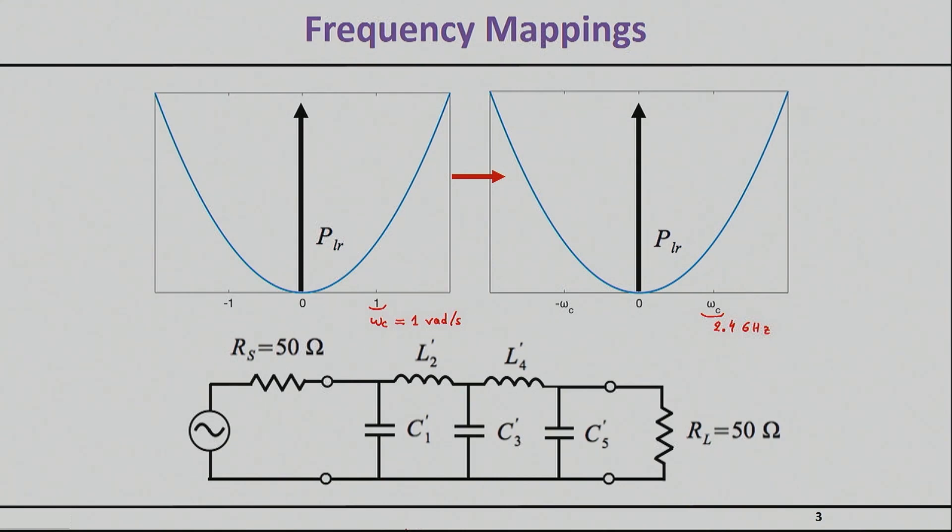So how do I basically scale things, scale my G elements—this is G4, this is G3, and so on—to have a cutoff of 1 to 2.4 or anything else that I like. What is graphed, by the way, here is the loss, the return loss of the filter—I'm sorry, the insertion loss of the filter as a function of frequency.